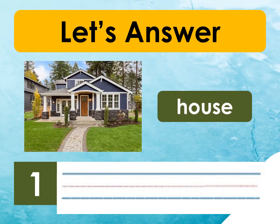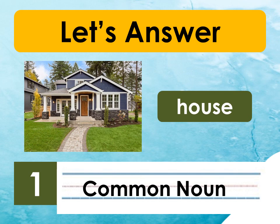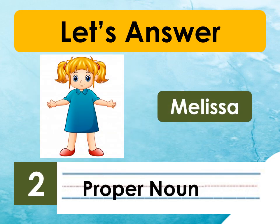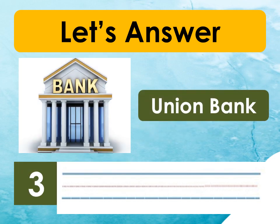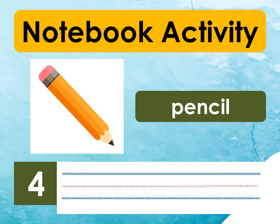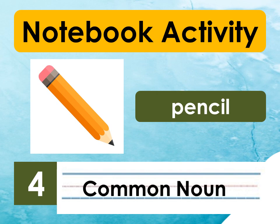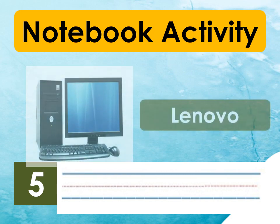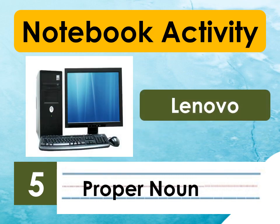Number 1 — that's correct, it's a common noun. House is a general name of a place and it starts with a small letter. Number 2 — that's correct, it's a proper noun. Melissa is a specific name of a person and it starts with a big letter. Number 3 — that's correct, it's a proper noun. Union Bank is a specific name of a place and it starts with a big letter. Number 4 — that's correct, it's a common noun. Pencil is a general name of a thing and it starts with a small letter. Number 5 — that's correct, it's a proper noun. Lenovo is a specific name of a thing and it starts with a big letter.